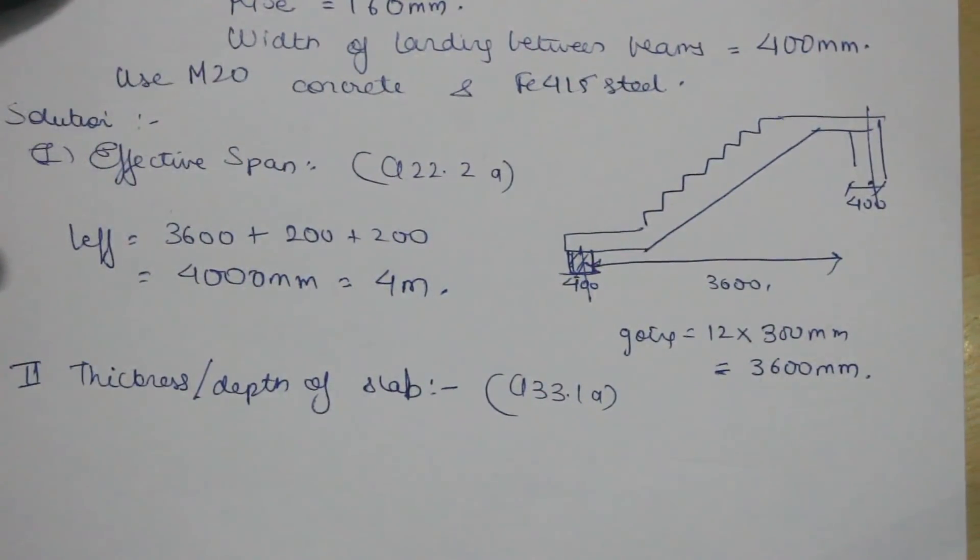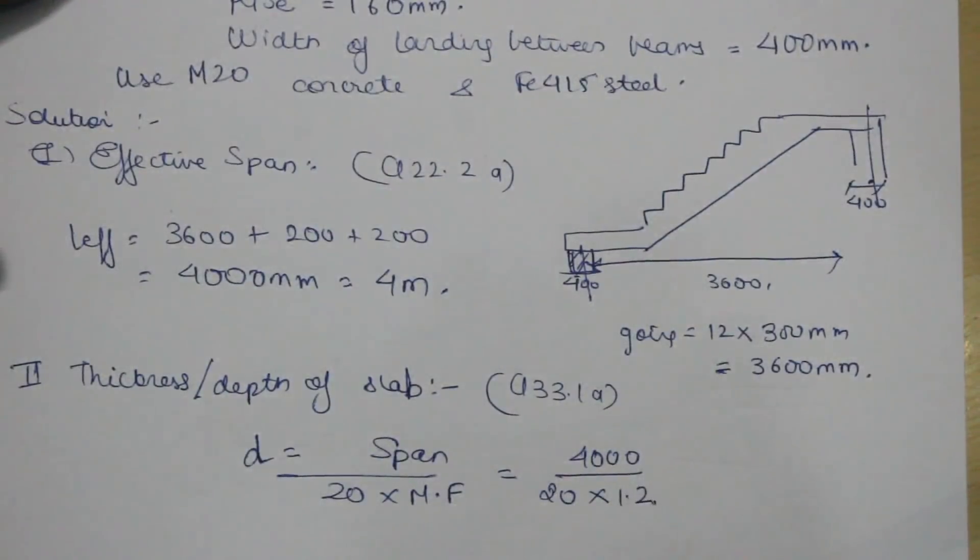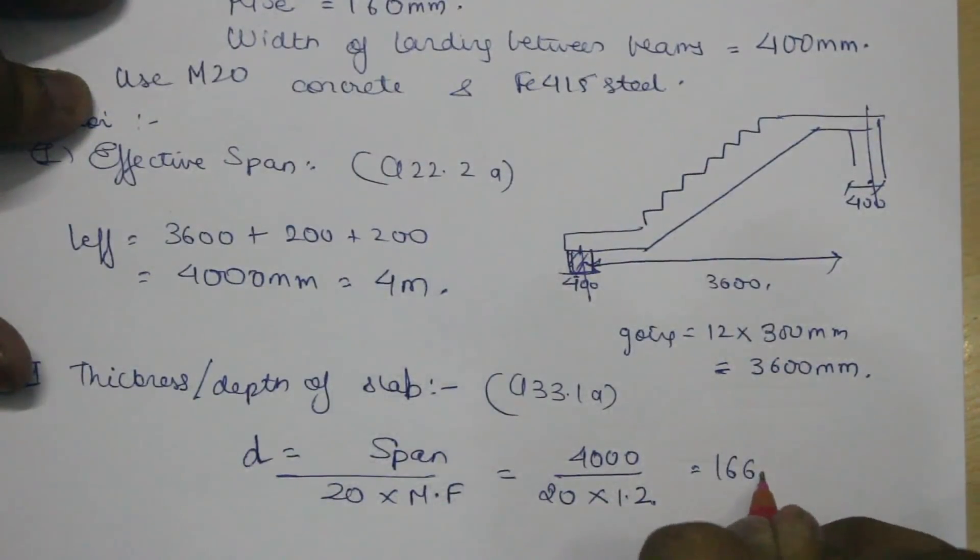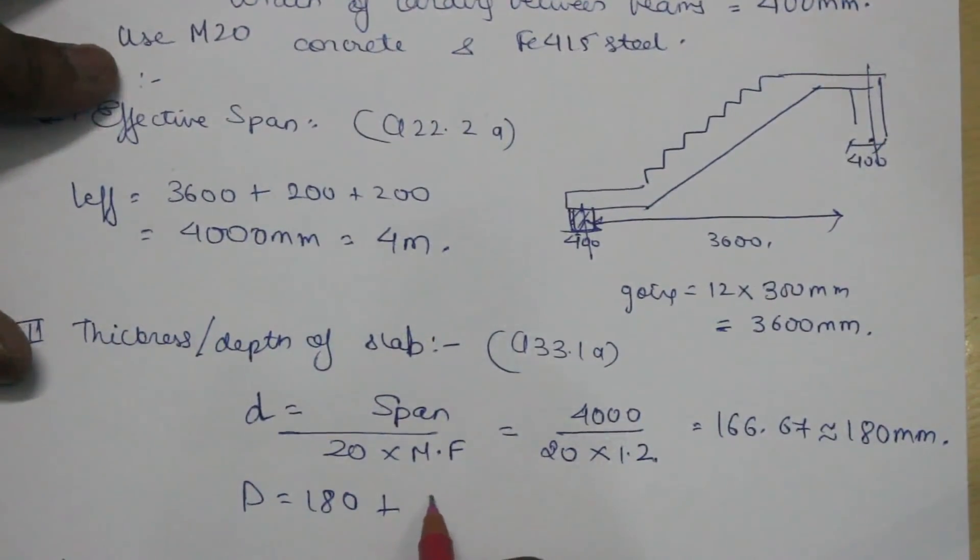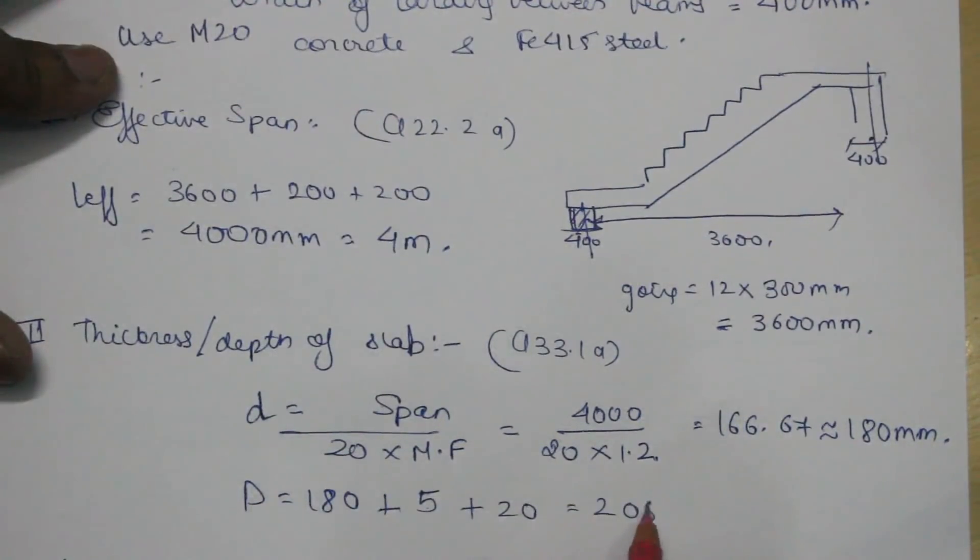As this is a simply supported slab, our basic value will be 20. The span by depth ratio will be span upon 20 multiplied by the modification factor. Span is 4000, 20 is the basic value, and modification factor will assume as 1.2, it can be assumed anywhere between 1.2 to 1.5. So it comes to 166.67, let's take it as 180 mm. So the total depth would be 180 plus, let's assume 10 mm diameter bars, so half the width of the bar will be 5 mm plus the clear cover is 20, so the total depth is 205 mm.